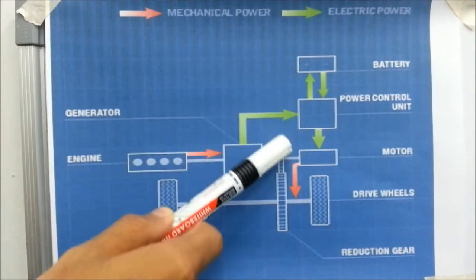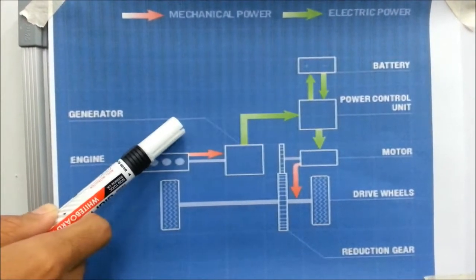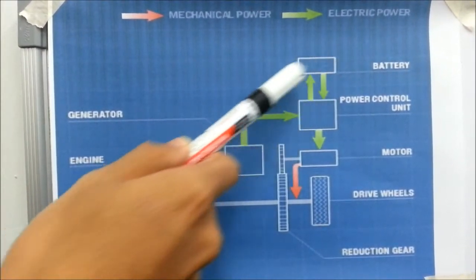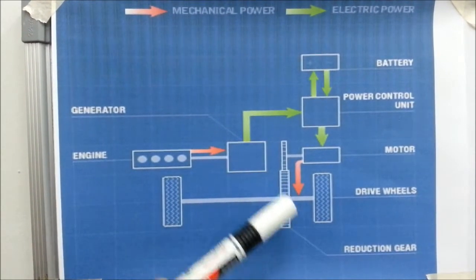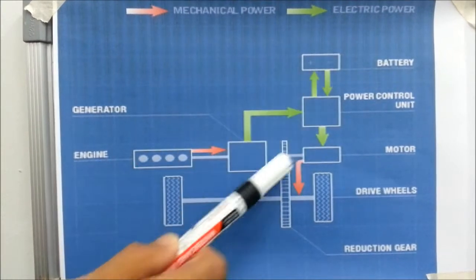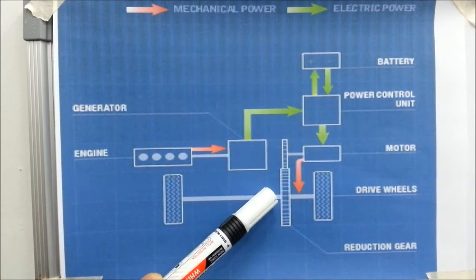The electricity is subsequently stored in the battery or used in the motor to propel the vehicle after going through the power control unit again. There is no direct coupling of the power source with the wheel.